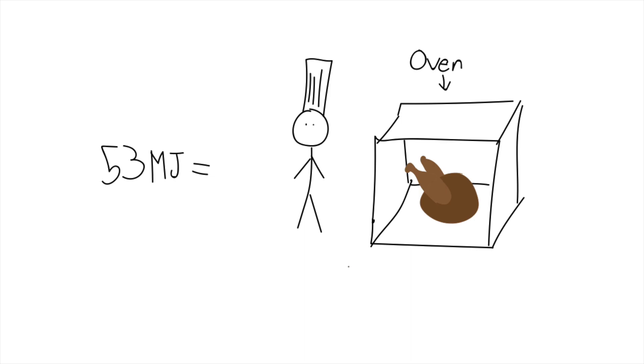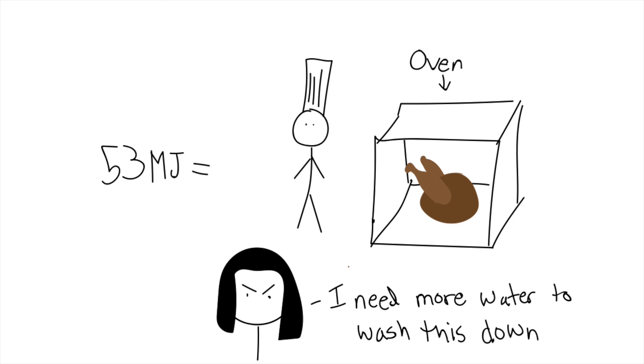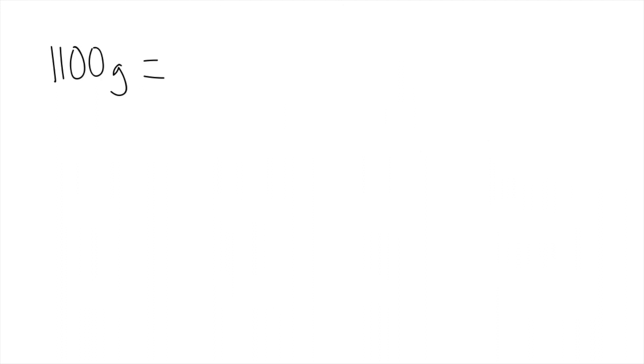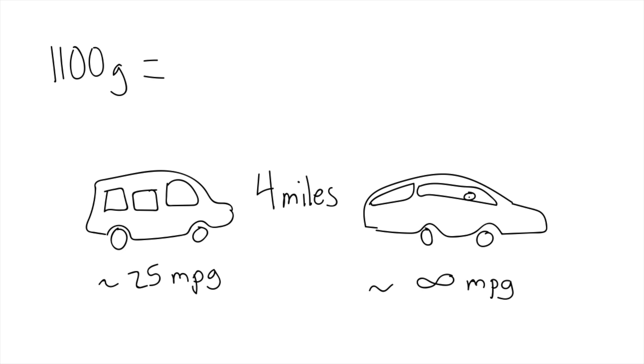The amount of oil a plastic bag depletes in its lifetime is about 100 grams. A paper bag depletes about 200 grams, and a reusable bag about 1100 grams. 1100 grams is the same amount of oil that it takes to produce enough gasoline to travel four miles in a 2016 Ford Explorer, or infinite miles in a Tesla, assuming you don't run out of battery.